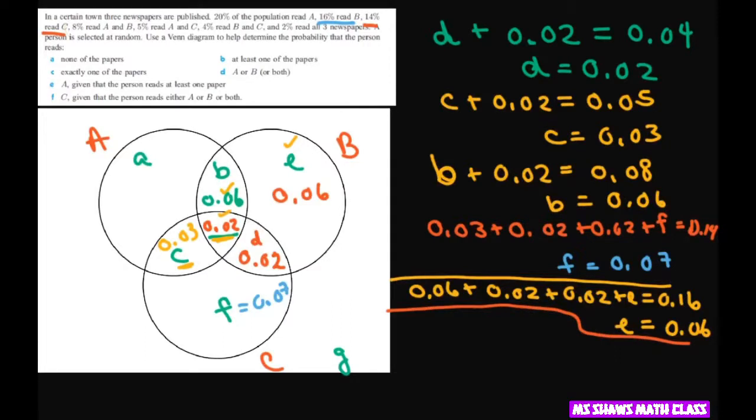And the last one. It says 20% of the population read A. So this one. So add up all those numbers. So 0.06 plus 0.02 plus 0.03 plus A equals 0.2. And this is A. So A when you solve that is going to be 0.09.